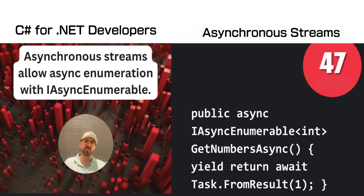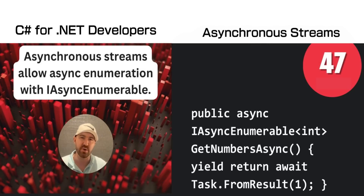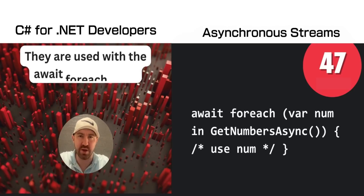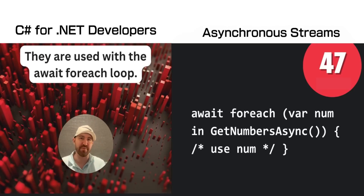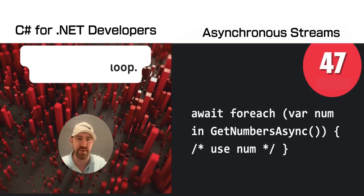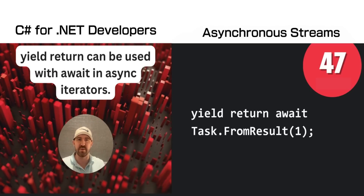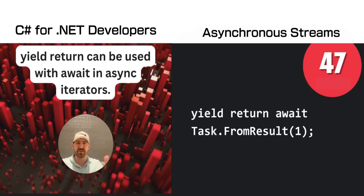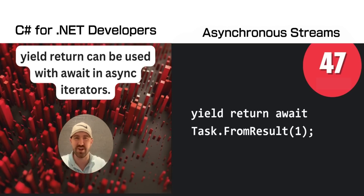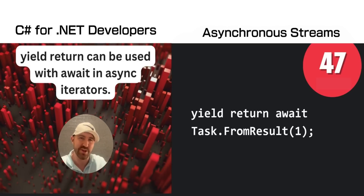Using IAsyncEnumerable allows you to implement the asynchronous stream design pattern. A lot of modern high-performance code bases use this. Here's an example of an await for-each loop. To implement this design pattern, you'll need to use yield return await, just like in the previous example for IAsyncEnumerable.